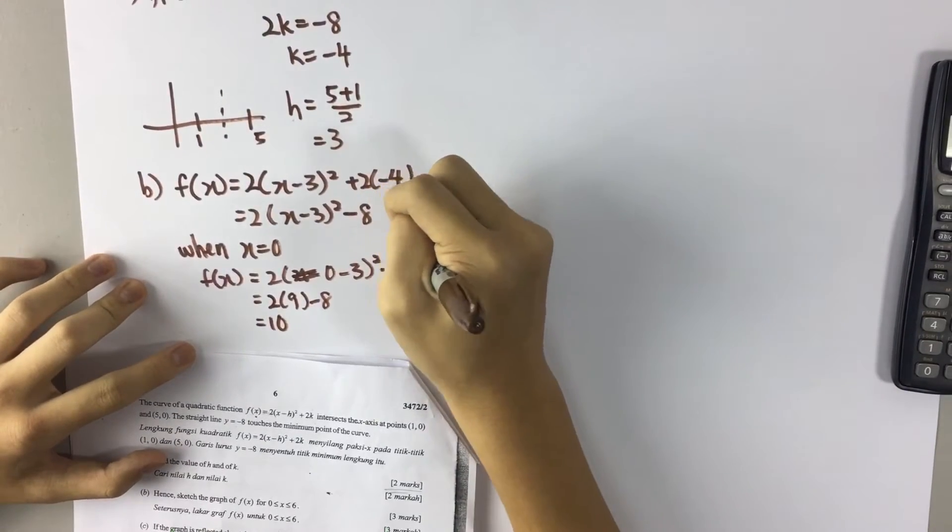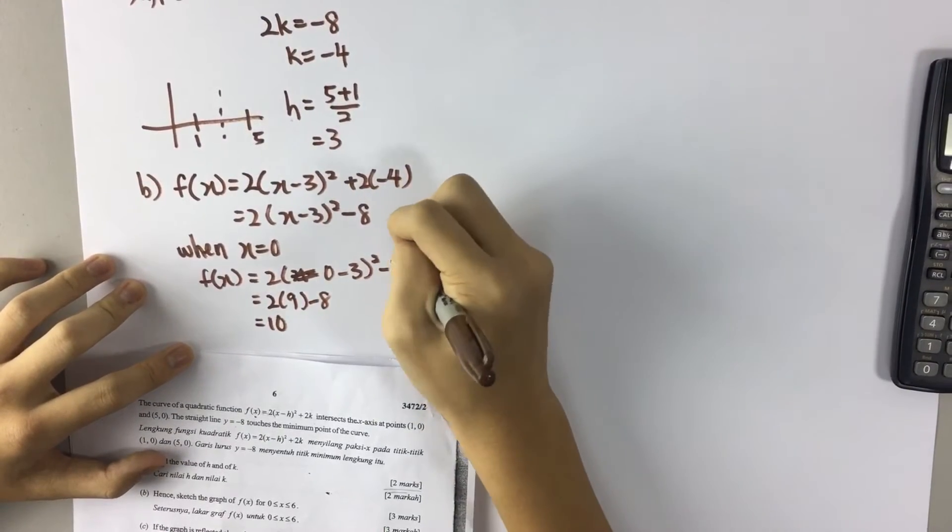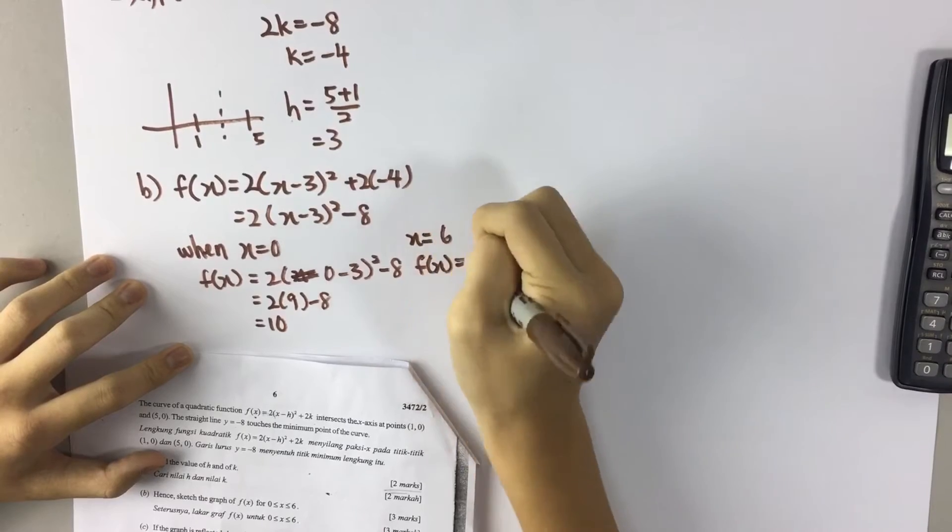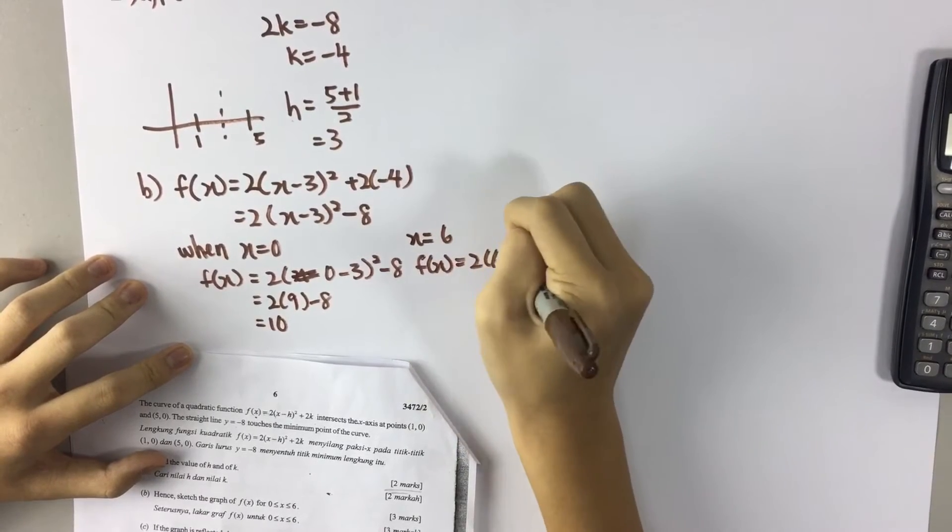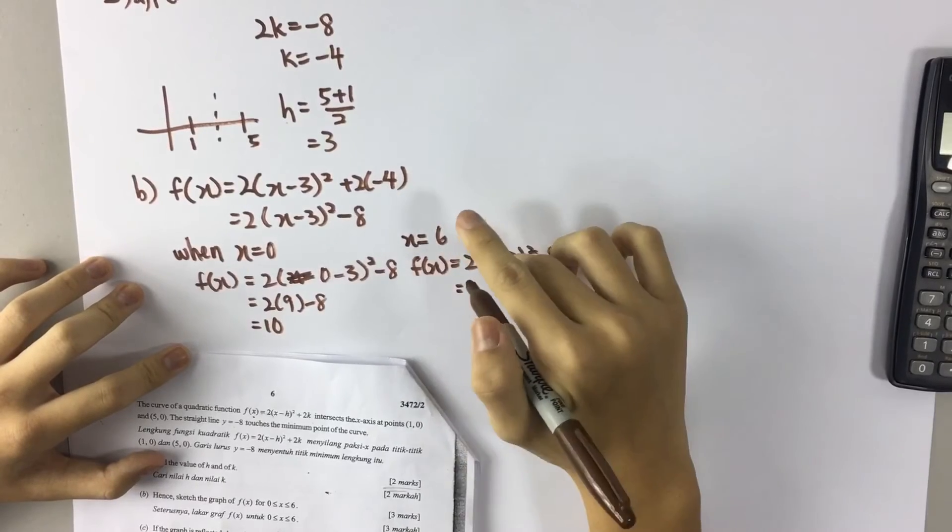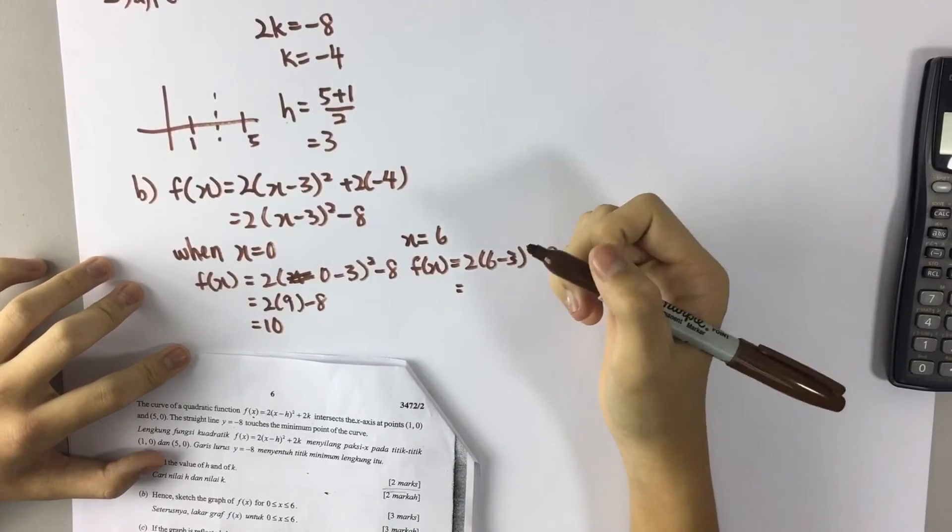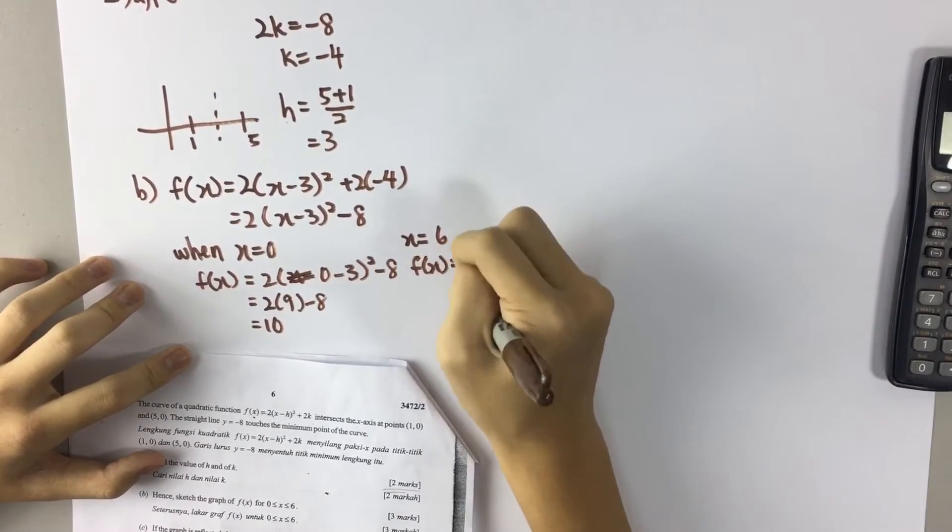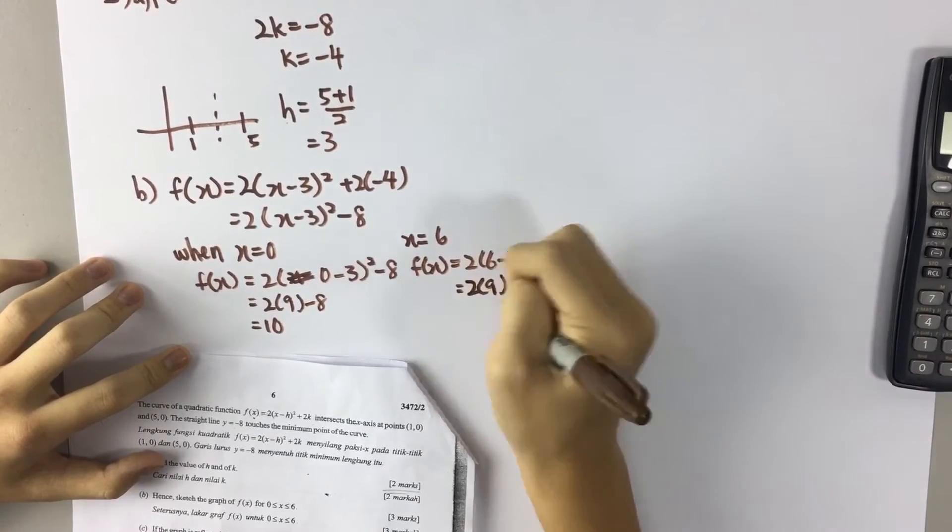When x is equal to 6, fx is equal to 2(6 minus 3)² minus 8. So 6 minus 3 is 3, 3 squared is 9. So 2 times 9 minus 8, so it's also 10.